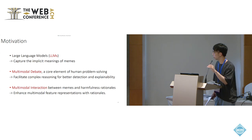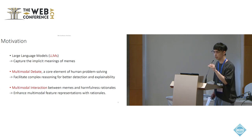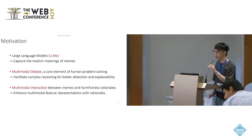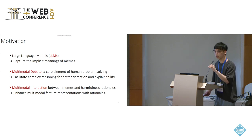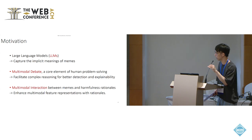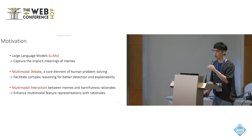In this paper, we consider three key principles in the design of our approach. Firstly, to capture the implicit meanings of memes, we leverage the rich knowledge embedded in large language models. Secondly, as the knowledge directly elicited from large language models may exhibit variation and bias, we resort to a core and fundamental element of human problem-solving — debate — to facilitate complex reasoning for better detection and explainability. Thirdly, the semantic interaction between memes and harmfulness rationals could augment multimodal feature representation, fostering a deeper contextual understanding in the context of harmfulness inference.